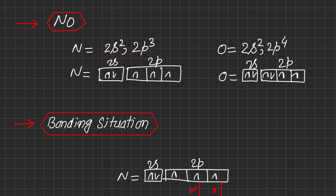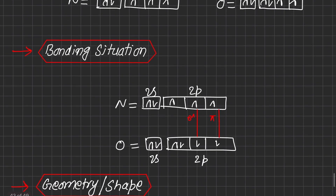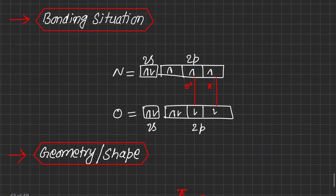Nitrogen has a valence shell electronic configuration of 2s² 2p³, written here in the form of valence bond theory. Similarly, oxygen has a valence shell electronic configuration of 2s² 2p⁴. Looking at the bonding situation, one electron from nitrogen and one from oxygen overlap to form one bond, and two more electrons form a second bond, giving two covalent bonds between nitrogen and oxygen — one sigma and one pi.